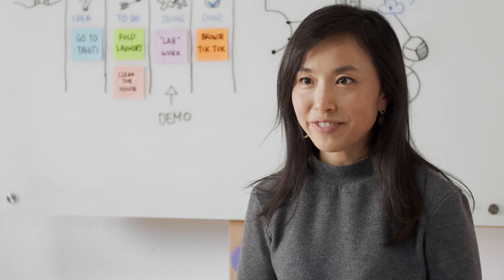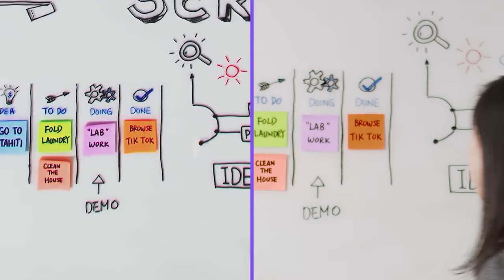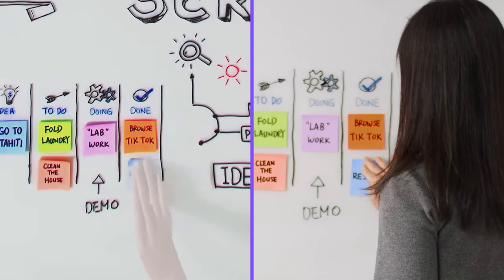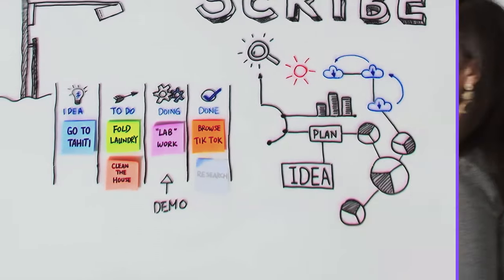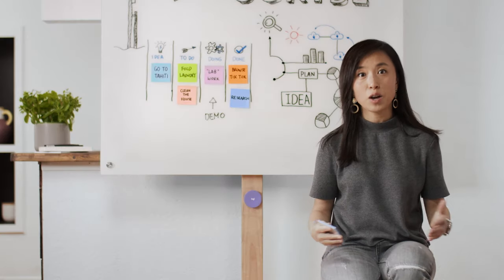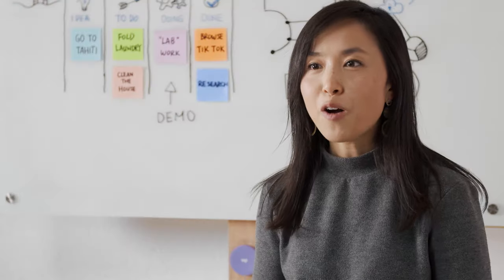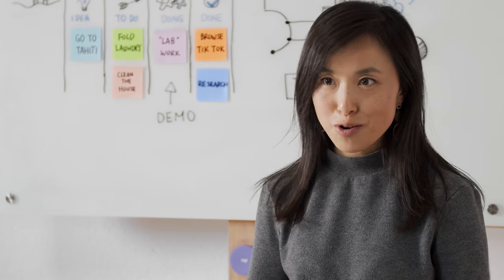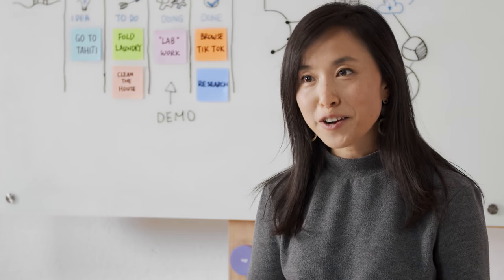One of my favorite features is presenter removal. Scribe uses artificial intelligence to make the presenter translucent so remote users can easily see the whiteboard content with nothing in the way. Now every participant in room or remote gets a clear view of the board.